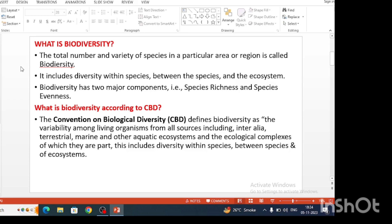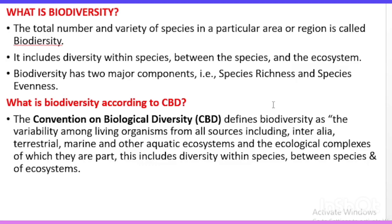That is the normal definition of biodiversity. Now let's see another definition according to the Convention on Biological Diversity. They say: the variability among the living organisms from all sources, including terrestrial, marine, and other aquatic ecosystems and the ecological complexes of which they are part. This includes diversity within the species, between the species, and the ecosystem.